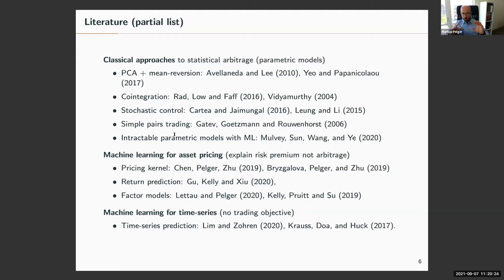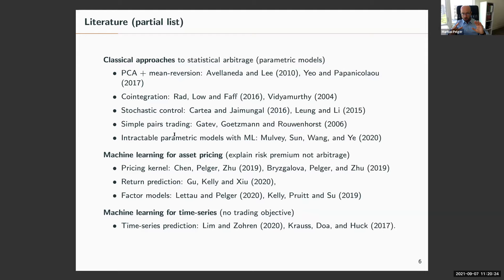Putting this in the literature: there has been a lot of work on statistical arbitrage using various parametric models that specify a specific stochastic process and derive parametric allocation rules. Our model is fully non-parametric, but we include the empirically best performing model from this literature — the Avellaneda and Lee paper and the extension by Yeo and Papanikolaou — as our parametric benchmark.